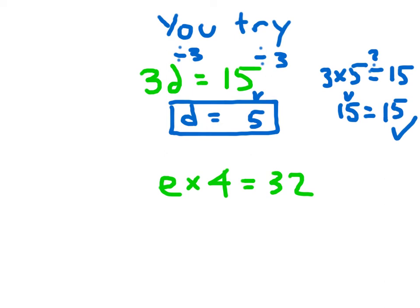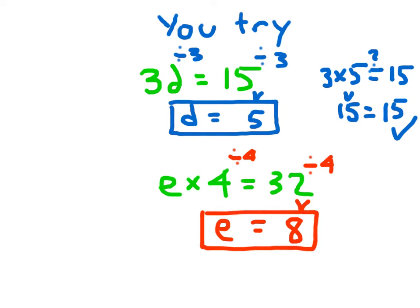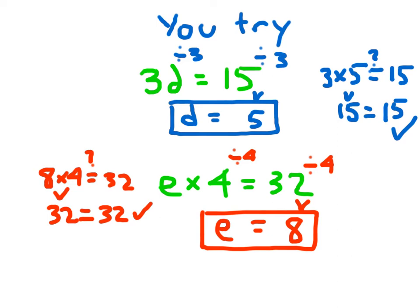For the other problem: E times 4, so I divide by 4 on both sides of the equation. 32 divided by 4 is 8, and E times 4 divided by 4 just leaves us with E, so E equals 8. For check work, plug in E equals 8 — replace every E with 8. 8 times 4 equals 32, and 32 does equal 32, so I get my check mark.